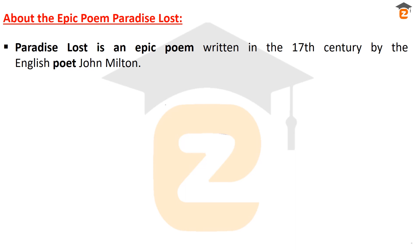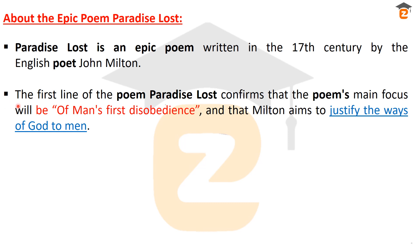Let's discuss more about the epic poem Paradise Lost. It is an epic poem written in the 17th century by the English poet John Milton. The first line of the poem confirms that the poem's main focus will be on man's first disobedience. This is the opening line of this great epic poem of English literature, and Milton's aim is to justify the ways of God to men — this was the last line of the opening stanza.